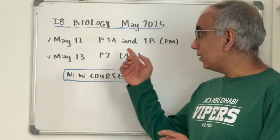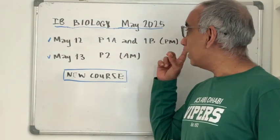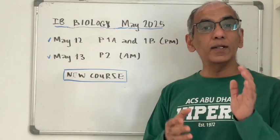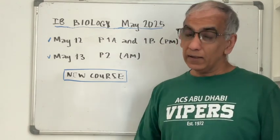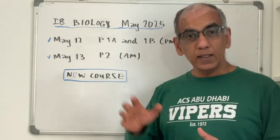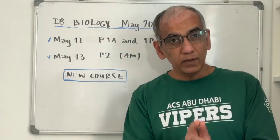On May 12th in the afternoon, you'll be taking paper 1A and paper 1B. Together, if you're an HL student, this will be 2 hours long. If you're SL, it will be 1 hour and 30 minutes. These papers will make up 36% of your final score.